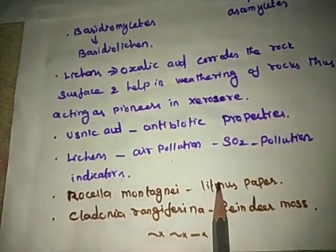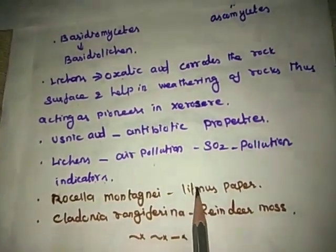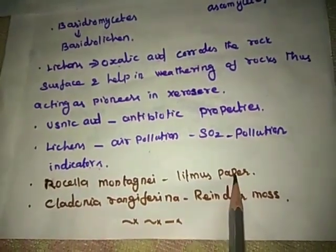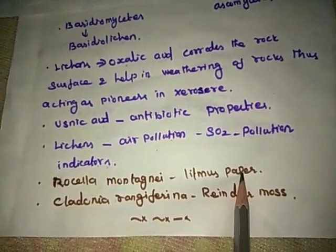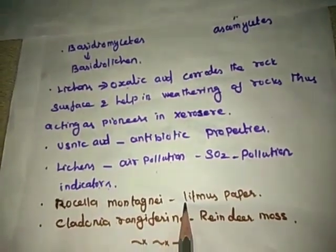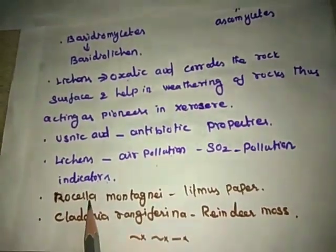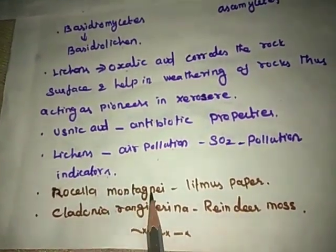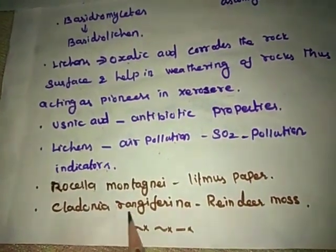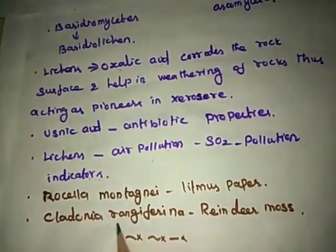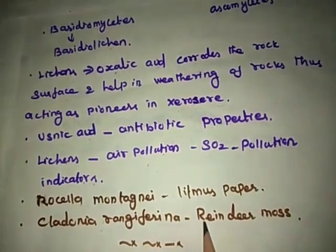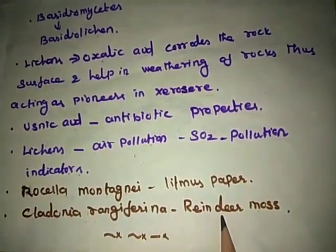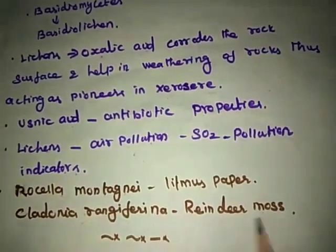The dye present in litmus paper, used as an acid-base indicator in laboratories, is obtained from Rocella montagnei. Cladonia rangiferina, also called reindeer moss, is used as food for animals living in the Tundra region.